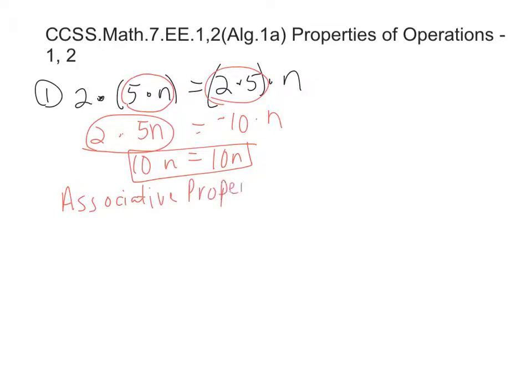If we had two numbers that we're flipping, then it would be the commutative property. And this is actually the associative property of multiplication. You can go through all of them. It's pretty simple. Let's go through one with commutative.